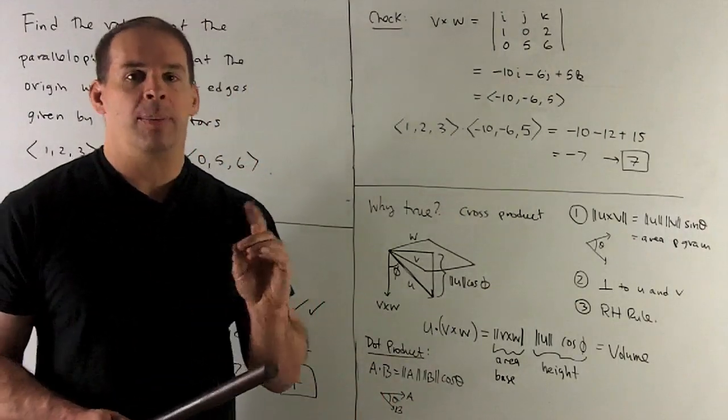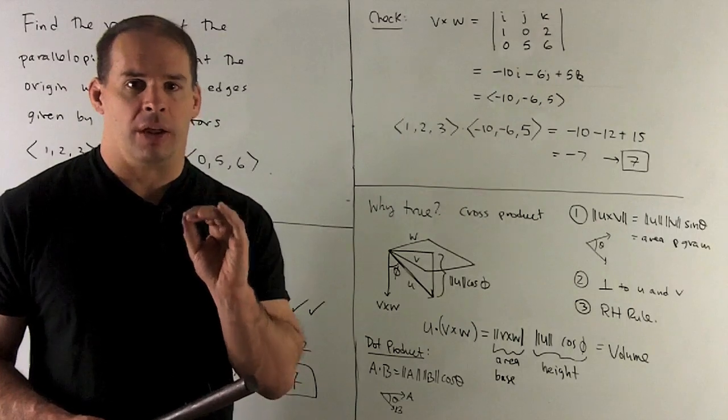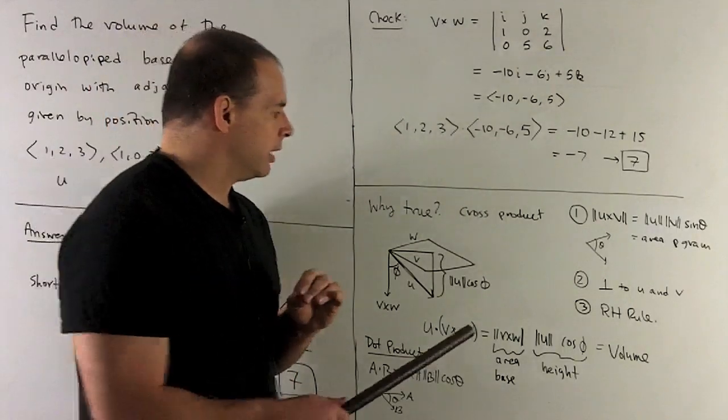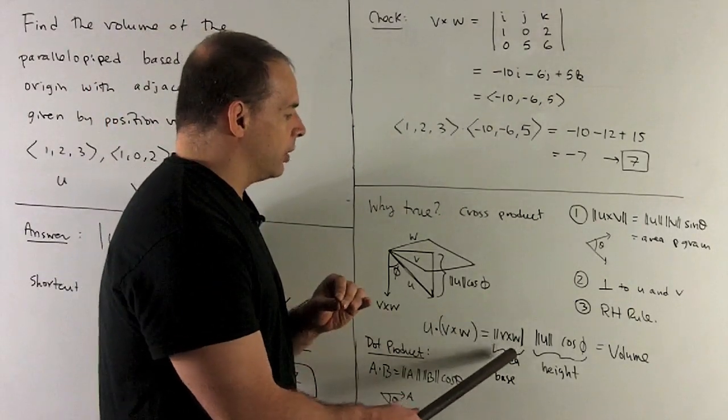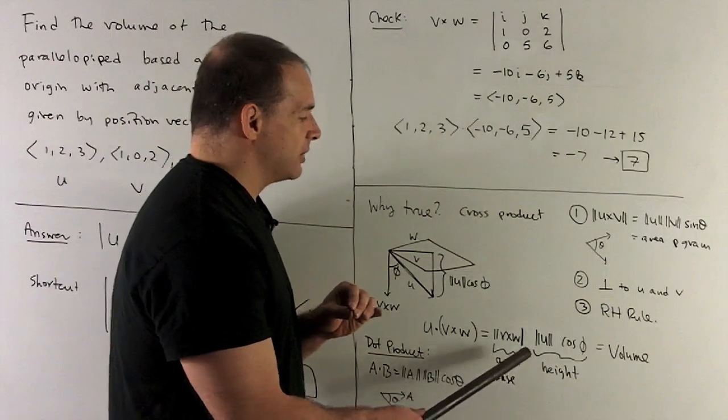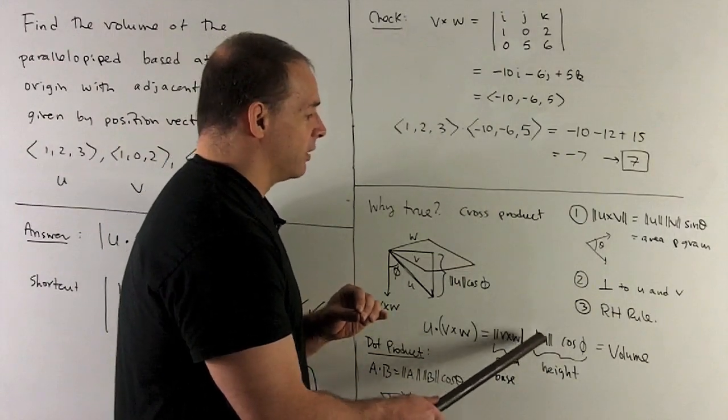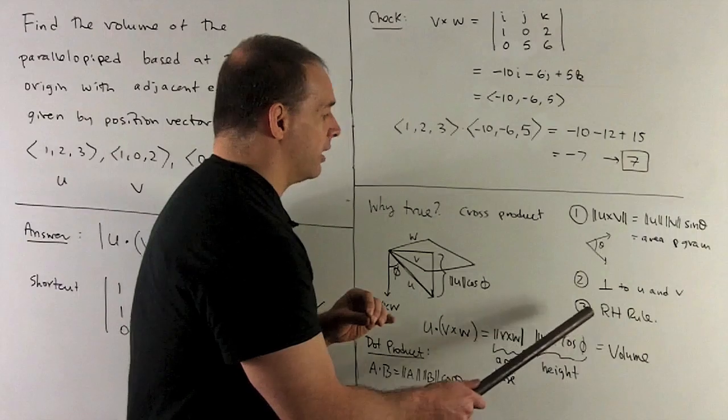So I have the area of the base, I have the height, so I know the volume of the parallelepiped. It's going to be length of V cross W, area of the base, times the height, which is length of U times cosine of phi.